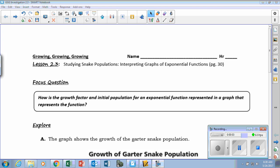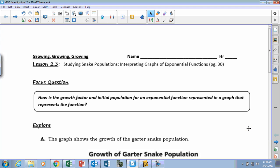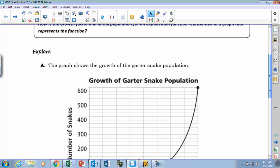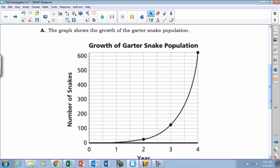Okay, so yesterday we did an equation, right? So today we're looking again at how to find that B value and that A value off of a graph. So the first thing we're given is this guy right here. The graph shows the growth of the garter snake population.